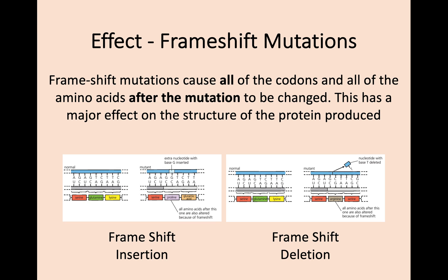Frame shifts come from either an insertion or a deletion single gene mutation, and the frame shift mutation causes all of the codons and all of the amino acids after that mutation to be changed. This has a huge effect on the structure of the protein because every other codon and every other amino acid has now been altered. It's like you shift the whole frame of the nucleotides either up or down.